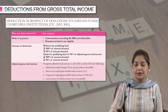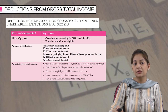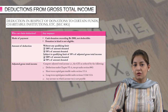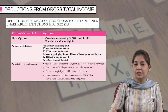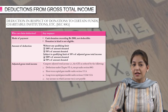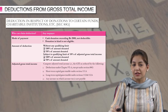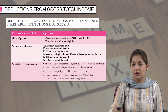For example, if you have donated rupees 1 lakh and it falls in the category of without any qualifying limit, you can claim 100 percent of rupees 1 lakh. If it falls in the 50 percent category, then 50 percent of 1 lakh, which is 50,000, can be claimed. The next category is subject to a qualifying limit of 10 percent of adjusted gross total income, where you must first calculate the adjusted GTI and then find 10 percent of it — that is the maximum amount deductible.